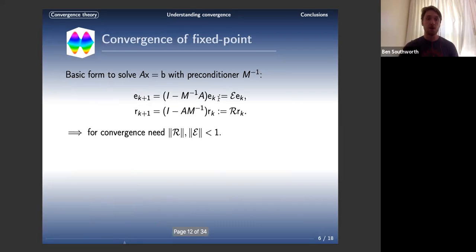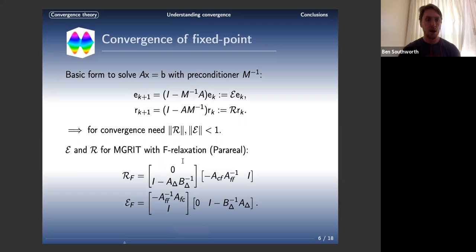When we analyze this, we want to look at the error or the residual. The error is I minus M-inverse A times the old error, and the new residual is I minus A M-inverse times the old residual. That's just standard fixed-point theory. For convergence, we really want these less than 1 in norm. In some norm, it doesn't matter what norm - some relatively appropriate norm for what we're looking at, L2 is a good choice. We want these less than 1 in norm so that no matter what the right-hand side is, no matter what our initial guess is, we're going to be converging towards our solution.